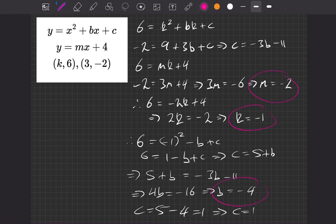So we've got all of our answers together, and we'll write them on the side. m is minus 2, k is minus 1, b is equal to minus 4, and c is equal to 1.